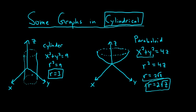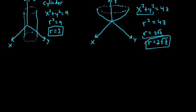So that's r = 2√z for a paraboloid in cylindrical coordinates. Let's look at some more examples. Let me switch colors to make it a little bit more exciting.